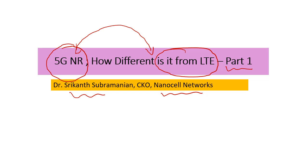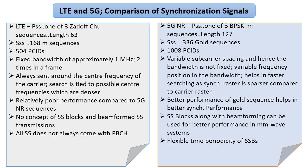I will start with the first signals that the UE observes, which are the synchronization signals. As in LTE, in 5G NR we have PSS and SSS, but they are somewhat different. The length of the PSS sequence is different, and the type of sequences are also different. Instead of a ZC sequence, we now have an M sequence. The number of secondary sync sequences is increasing, and along with the fact that SSS uses a Gold sequence, this increases the number of unique cell IDs from 504 to 1008.